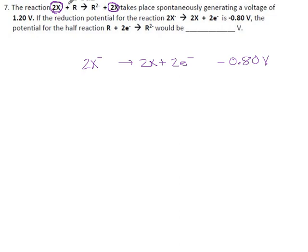The other half is we have R turning into R²⁻. This side's got a minus 2 charge, so that only makes sense if there were two electrons over here. And this has a voltage and I don't know what it is yet. But they tell us that the grand total of these generated a voltage of 1.20 volts.